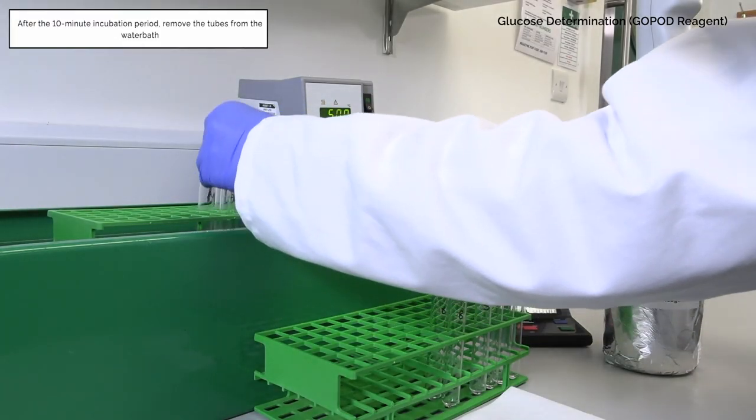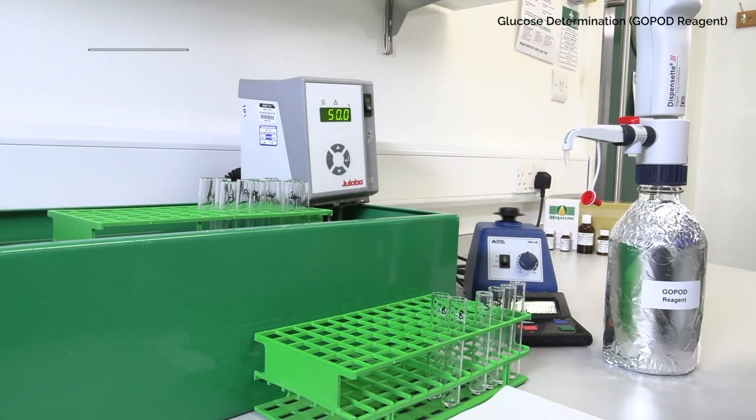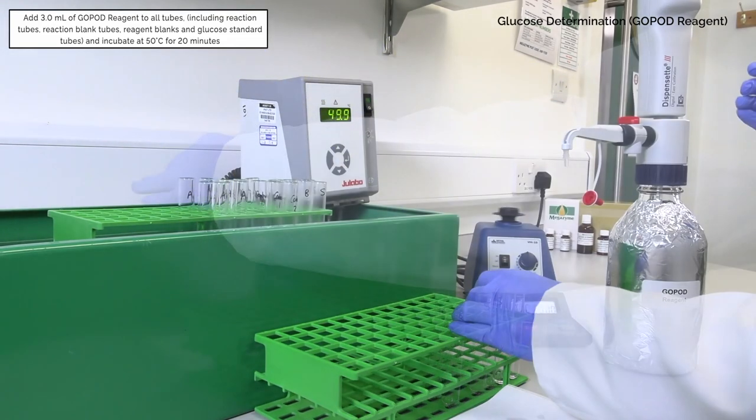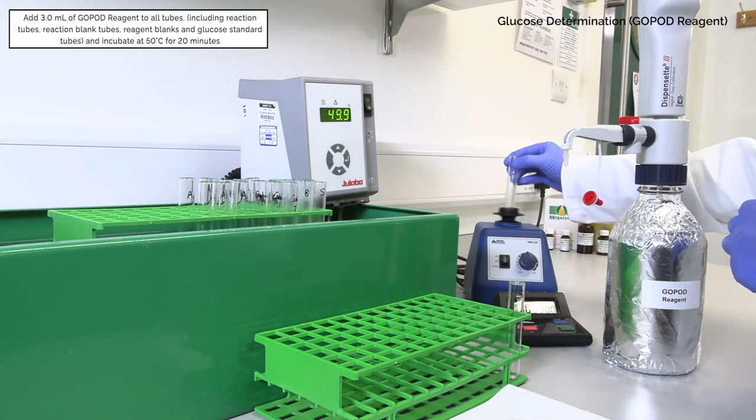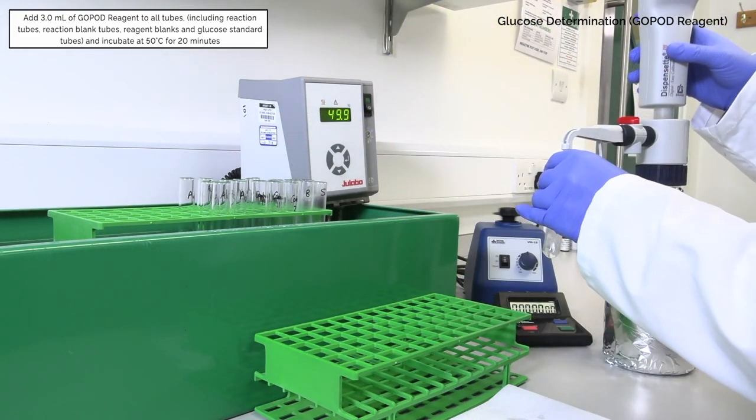After the 10-minute incubation period, remove the tubes from the water bath and add 3 milliliters of GOPOD reagent to all tubes, including reaction tubes, reaction blank tubes, reagent blanks and glucose standard tubes, and incubate at 50 degrees Celsius for 20 minutes.